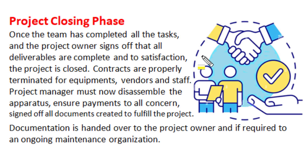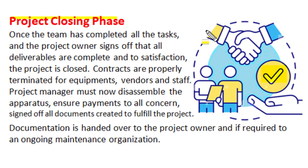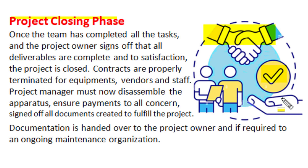Once any team completes all its assigned tasks and the project owner signs off that the output or deliverables are complete and to the satisfaction of project guidelines, that part of the project is treated as closed. In the project closing phase, the contracts made for project execution are properly terminated for all equipment vendors or working staff members. The project manager must disassemble the apparatus, ensure payments to all concerned, sign off all necessary documents, and hand over those documents to the project owner. If required, these documents can be handed over to the ongoing maintenance organization for that project.